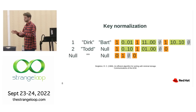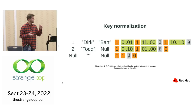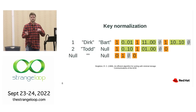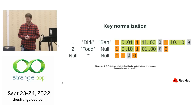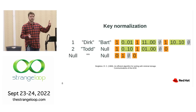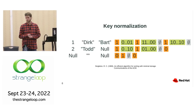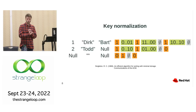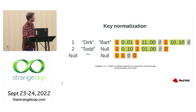Now let's talk about optimizations. The first one is key normalization — it's a very old technique. It states a simple thing: instead of having just literal column values in our index, we replace them with binary strings with minimum extra information. Specifically, one bit representing whether the value is null or present, plus the actual binary representation. It sounds simple, but it enables a couple of interesting things.